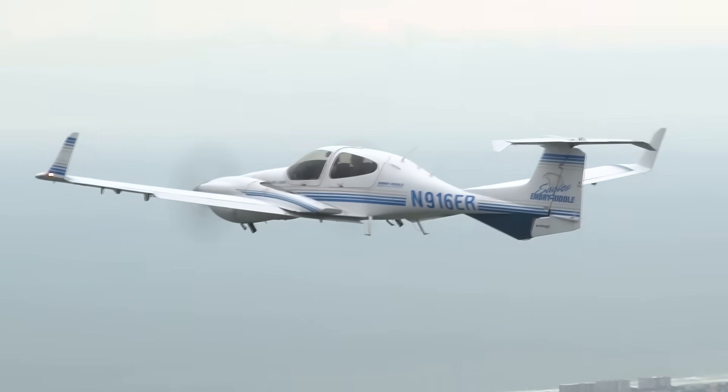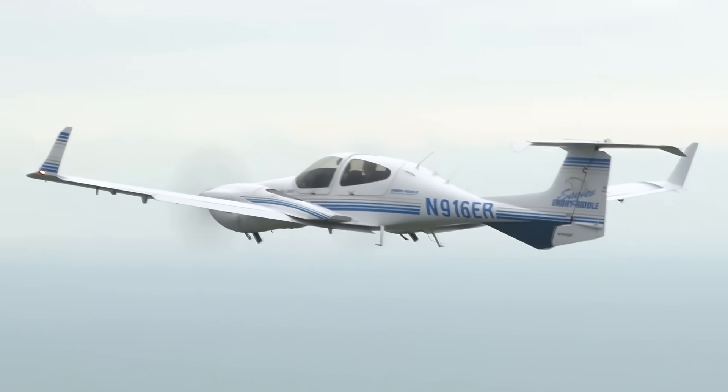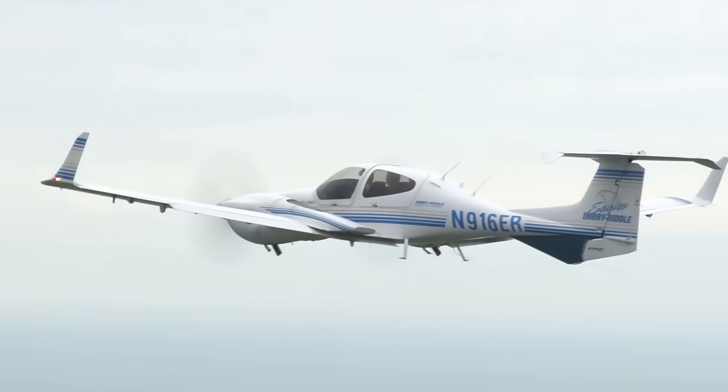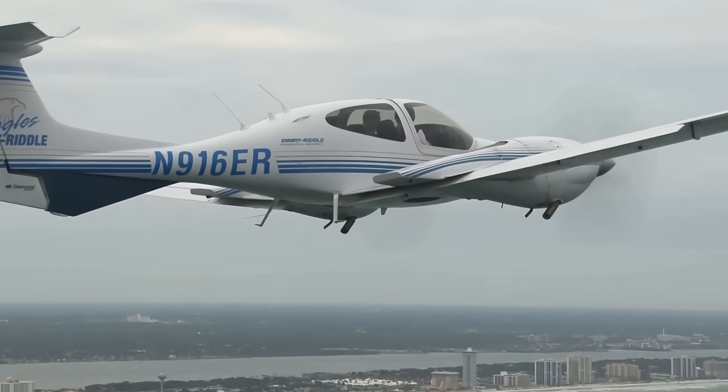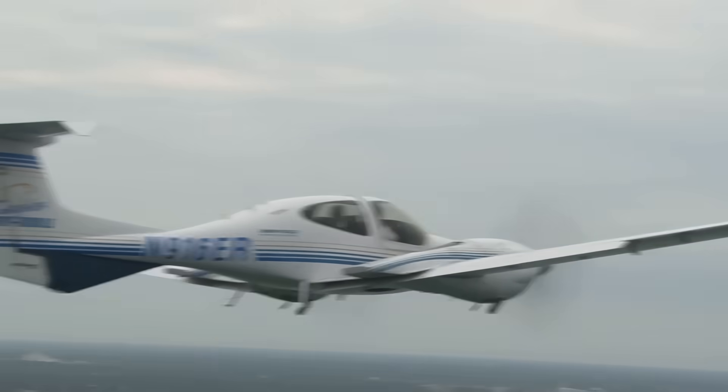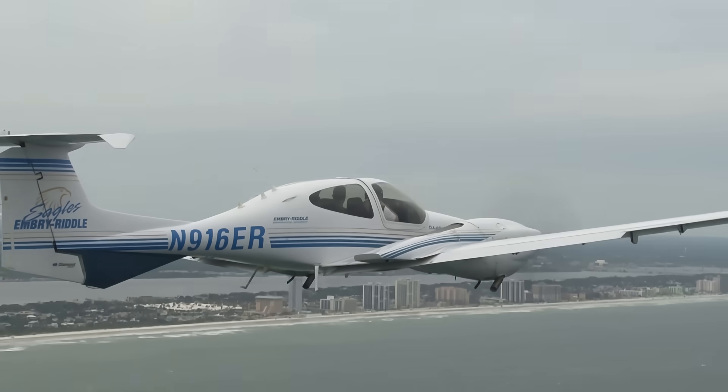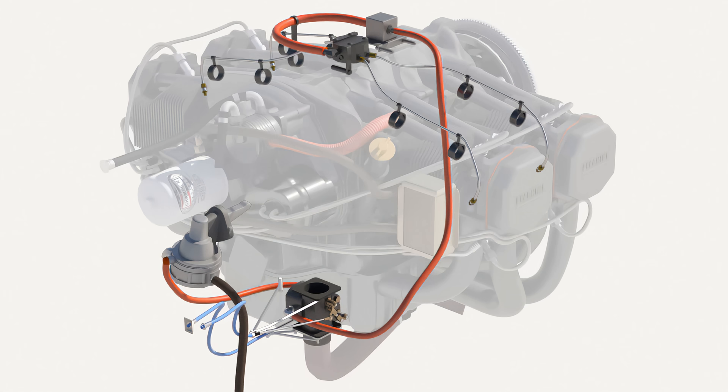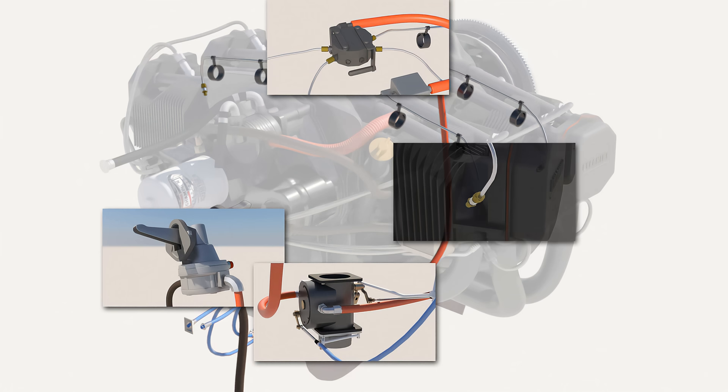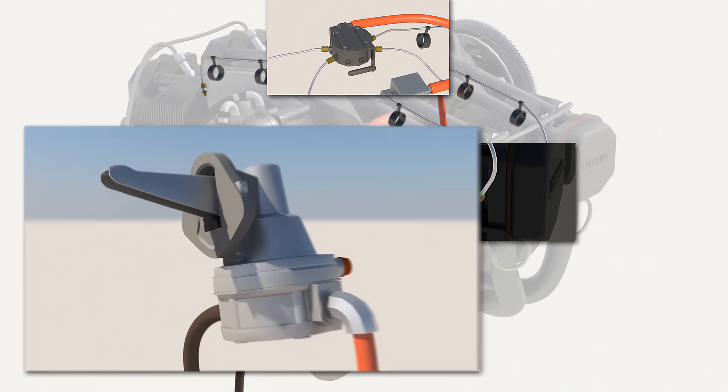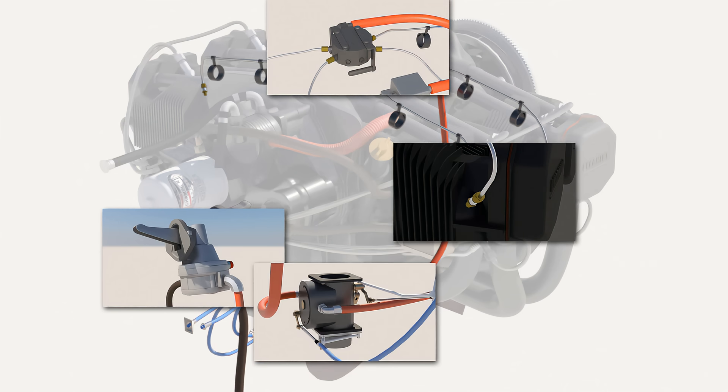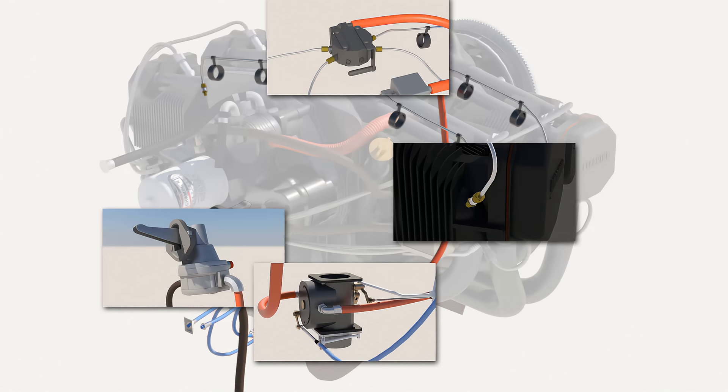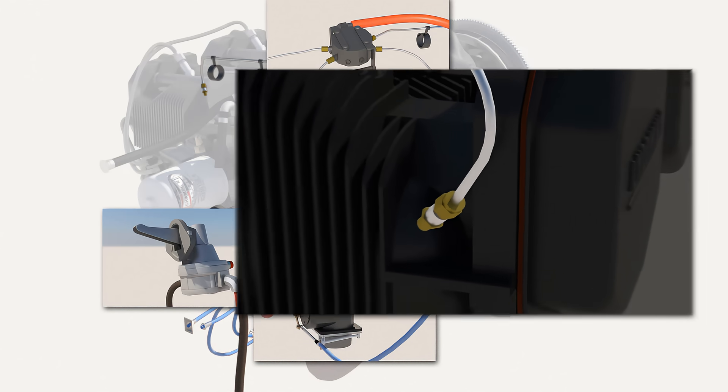In newer airplanes, fuel injection systems are installed, which have many benefits over carbureted engines. Fuel injection engines reduce the amount of fuel required, increase engine power output, and allow for the precise use of the fuel. Rather than having a carburetor, a fuel injected system is split up into different components. These consist of fuel pumps, a fuel control unit, a fuel manifold valve, and finally, fuel discharge nozzles.